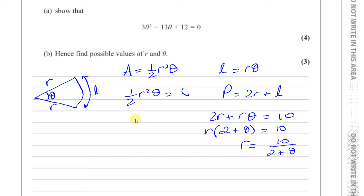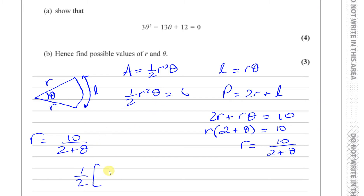That's probably the easiest way to do it. If I try to make r the subject from the area equation, I'm going to have something to do with square roots — r will equal the square root of 12 over theta — which makes it more complicated. So I'll take r equals 10 over 2 plus theta and replace this r in the area equation: a half times 10 over (2 plus theta), all squared, times theta equals 6.